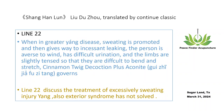Line 22 discusses the treatment of excessively sweating injuring yang while the exterior syndrome has not resolved. Tai Yang disease is supposed to promote sweat, but if it is a Guizhi decoction syndrome and Ma Huang Tang is mistakenly used to promote sweating, the ying and wei will become more weak, damaging both yang chi and yin fluid.